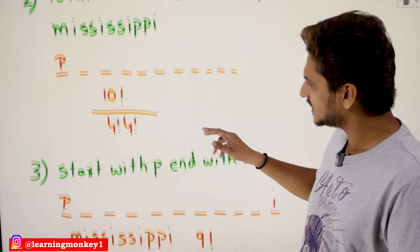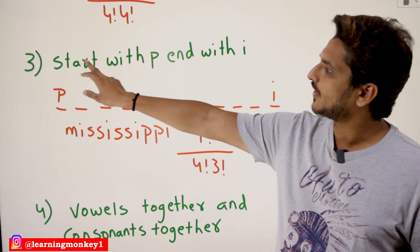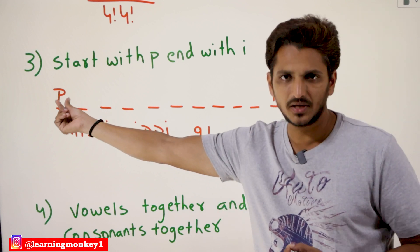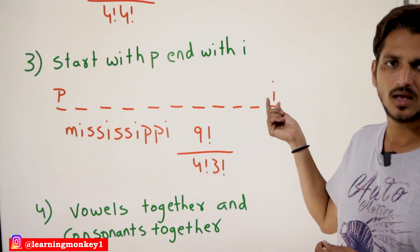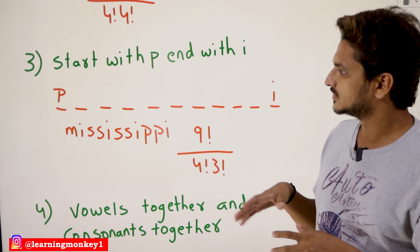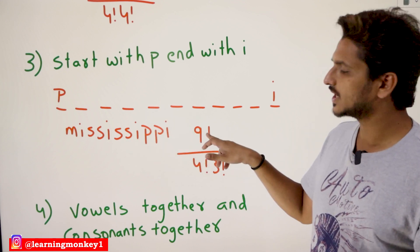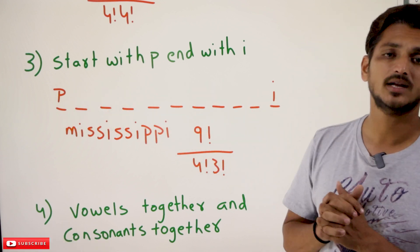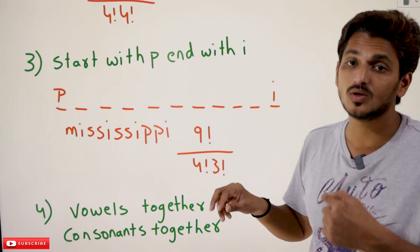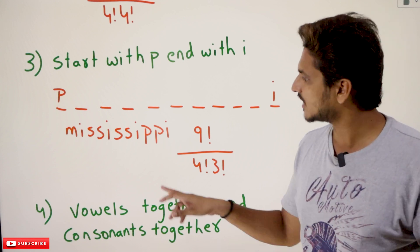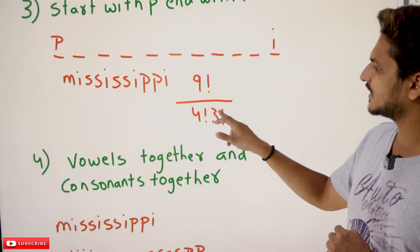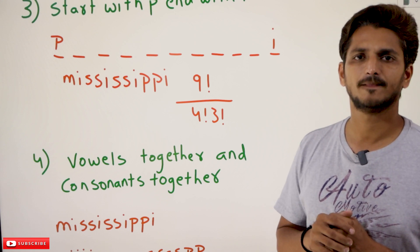Now coming to the next example, just an extension: we need to find the words that start with P and end with I. So in the beginning you place P, and in the end you place I — these are fixed positions. In the remaining 9 positions, once you place P at the start and I at the end, there are 9 characters available. These 9 characters can be placed in 9 positions in 9 factorial ways. But in those 9 characters, I is repeated 3 times and S is repeated 4 times. So that's why it is 9 factorial divided by 4 factorial and 3 factorial.